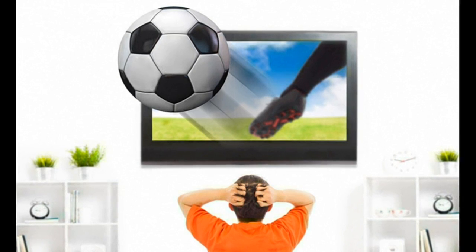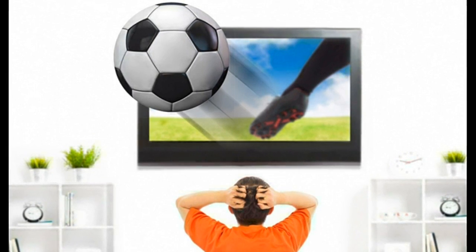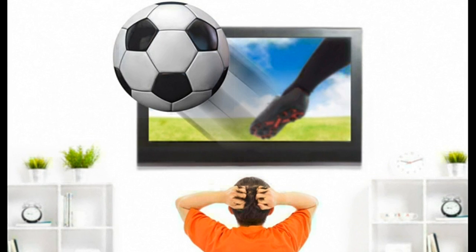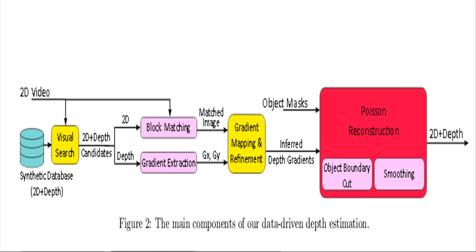Therefore, a high-quality automated 2D to 3D conversion method is highly desired for live events. MIT's new approach is to develop a domain-specific conversion instead of a general method. In particular, they demonstrate this by developing a method for generating 3D soccer video. Their method is data-driven, relying on a reference database of 3D videos.